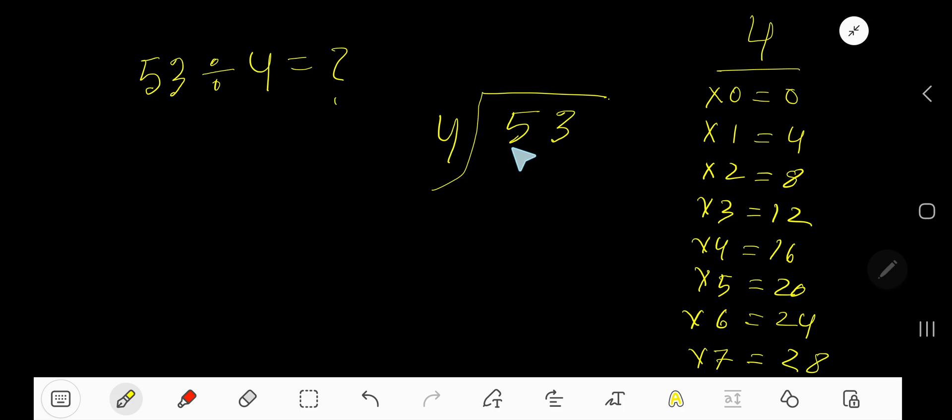4 goes into 5 how many times? 2 times 8, which is greater, so 1 time. Write 1. 1 times 4 is 4. Subtract 1. Bring down the next digit.